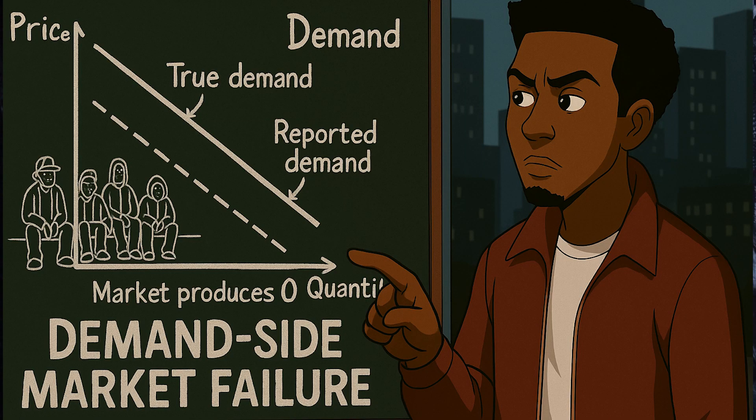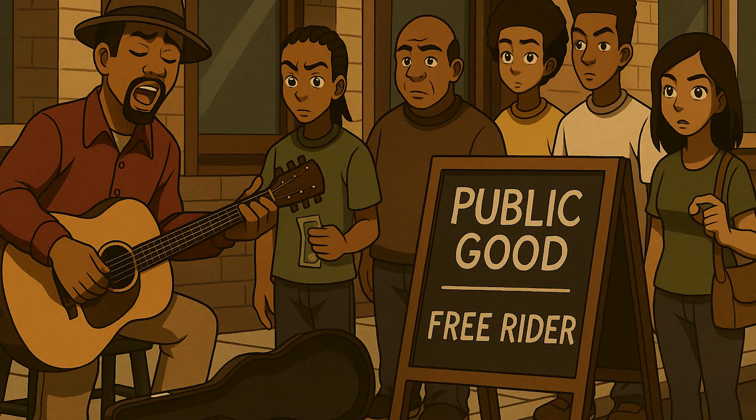Public goods are also non-excludable: once the good exists, you can't realistically keep non-payers from benefiting. If everyone can benefit without paying, many people will try to free ride. When that happens, true willingness to pay never shows up in the market — the demand curve looks artificially low, sometimes so low that private firms produce nothing, even if the good is valuable to society. That's a demand-side market failure.